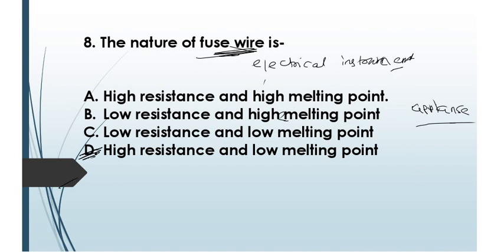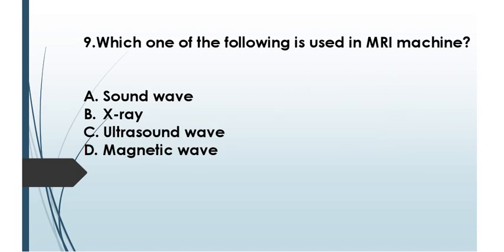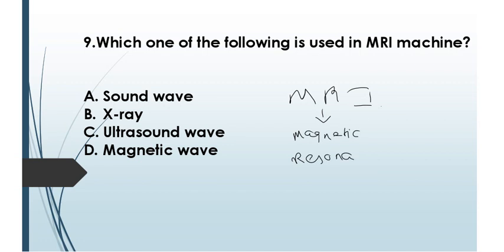Question number nine: which of the following is used in an MRI machine? MRI stands for Magnetic Resonance Imaging. Since the full form itself contains 'magnetic,' the answer is option D: magnetic waves. MRI is useful in detection of tumors related to the brain and spinal cord.